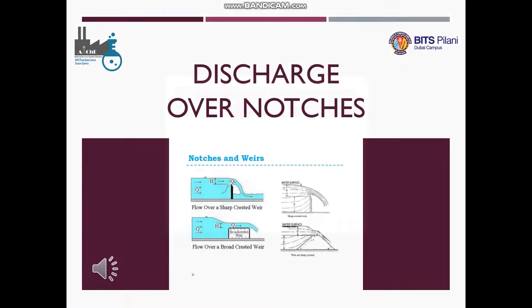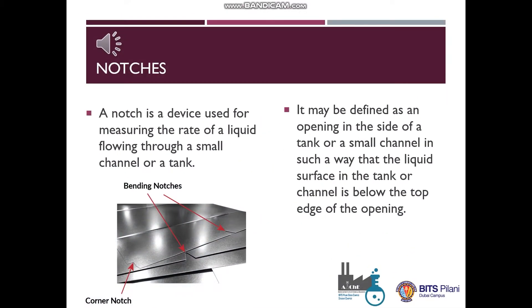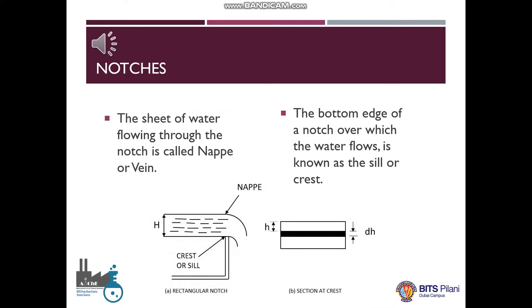So what is a notch? A notch is a device used for measuring the rate of a liquid flowing through a small channel or a tank. It may be defined as an opening in the side of a tank or a small channel in such a way that the liquid surface in the tank or channel is below the top edge of the opening. The sheet of water flowing through the notch is called nap or vane. The bottom edge of a notch over which the water flows is known as the sill or crest.